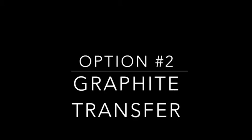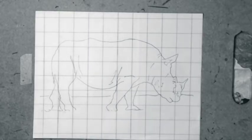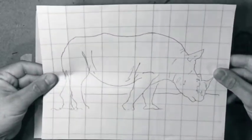Option two is a graphite transfer. So what you do is you take your sketch paper. Right here I have my Rhino sketched on my grid paper. And I have my final paper.